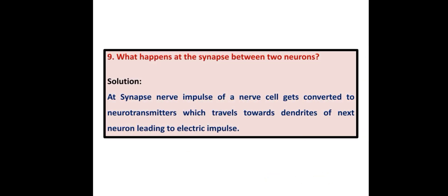What happens at the synapse between two neurons? At the synapse, the nerve impulse of a nerve cell gets converted into neurotransmitters, which travel toward the dendrites of the next neuron, leading to the creation of an electrical impulse in that neuron.